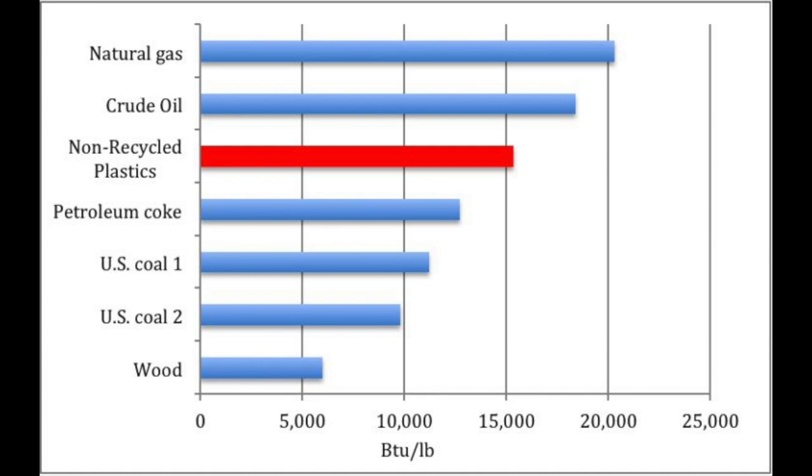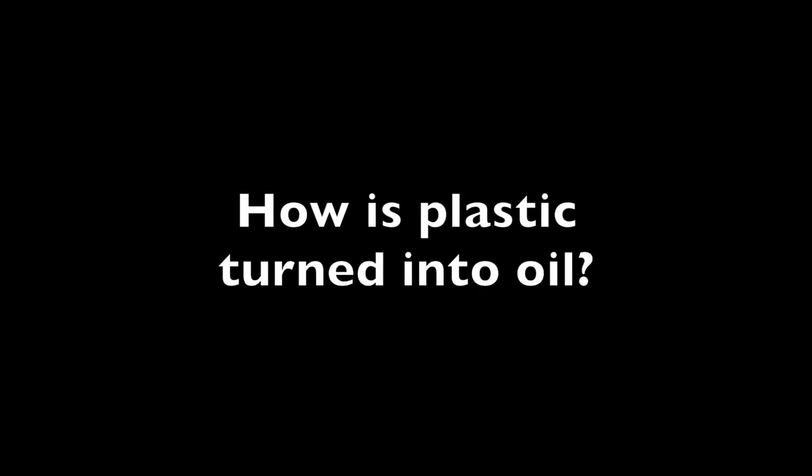Besides recycling or the landfill, plastic can be turned into other forms of energy. Scientists have developed a technology to turn plastic back into oil by heating it in the absence of oxygen, which doesn't release any greenhouse gases. Non-recycled plastic stores more energy than coal and falls just behind natural gas and oil for energy per pound. The resulting oil can be used to create gasoline for cars or a number of other things.